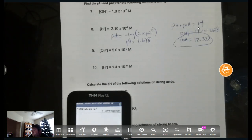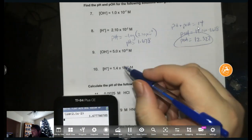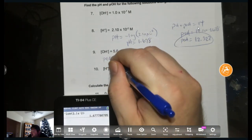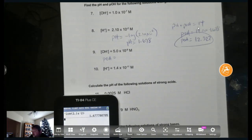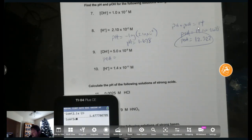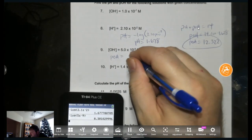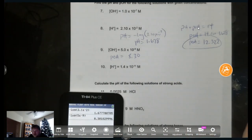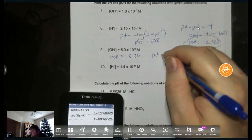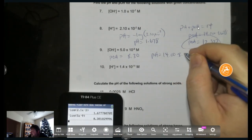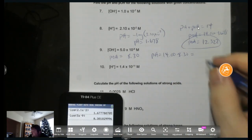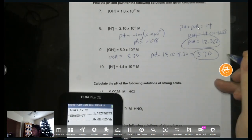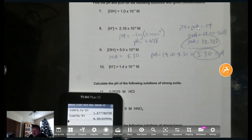All right, let's do the same thing for number 9 here. This time we're given hydroxide, so we have to find pOH first. So I'm not going to set it up, because I'm going to go right to the calculator. Negative log of 5e to the minus 9. So that's going to give us an 8.30 for the pOH. And now we know how to find pH from that. It's just going to be 14 minus 8.30, which is 5.7. That is the pH. Easy peasy, right?